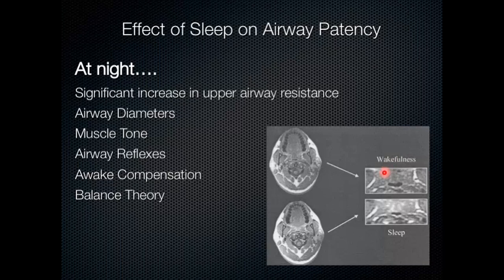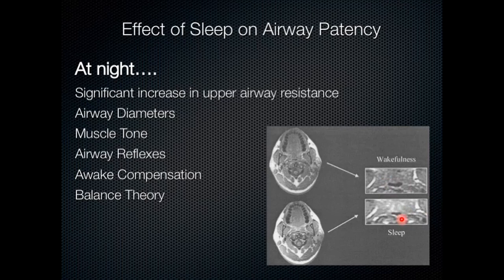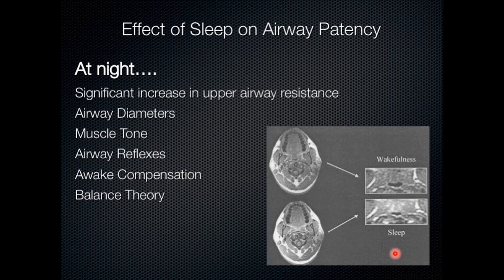An MRI of a patient awake and then asleep shows the dramatic change just above the laryngeal inlet at the base of the tongue. Even a small change in radius has a dramatic effect on airway resistance. The MRI is not a functional test — just an anatomical snapshot — but the area seen during sleep changes quite dramatically.